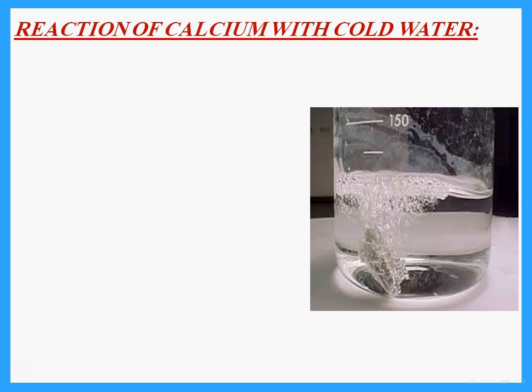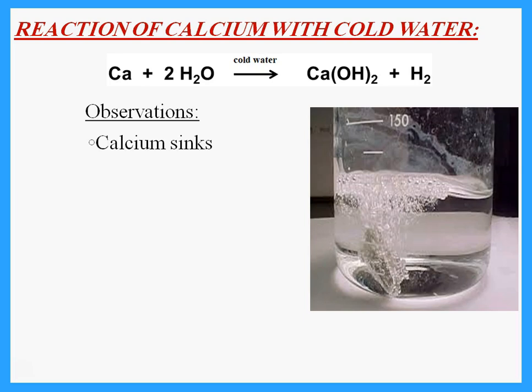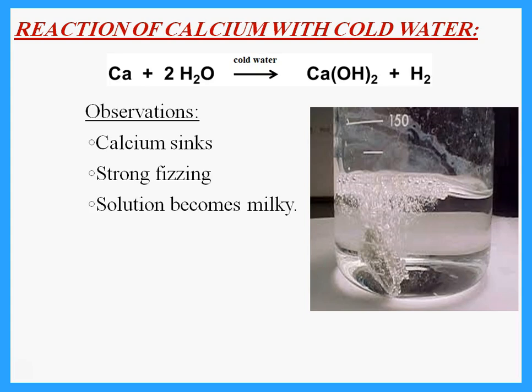Calcium is in Group 2 and still reacts with cold water to give calcium hydroxide plus hydrogen. However, it has higher density so it sinks. You see strong fizzing or bubbles of gas. The calcium hydroxide formed is not very soluble in water, so the solution becomes milky.